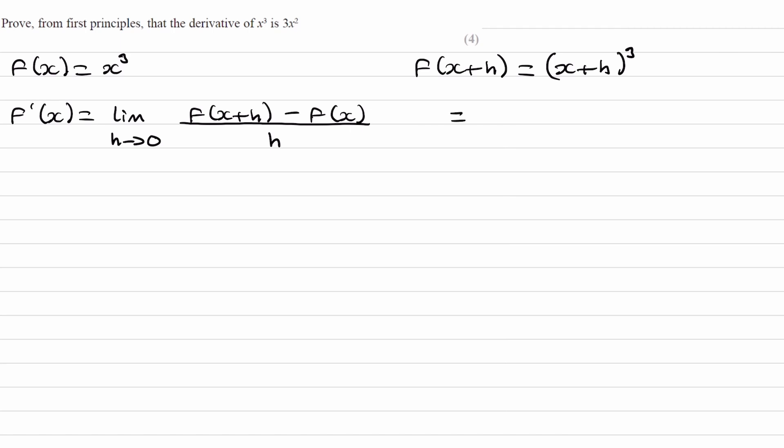And to expand this, I would use binomial expansion. You can use three brackets all next to each other as well and then just expand it out. I find binomial a lot easier, especially if you memorize the first few rows of Pascal's triangle. So this will be x cubed plus 3x squared h plus 3x h squared plus h cubed.